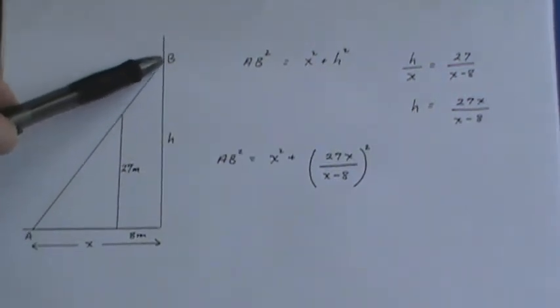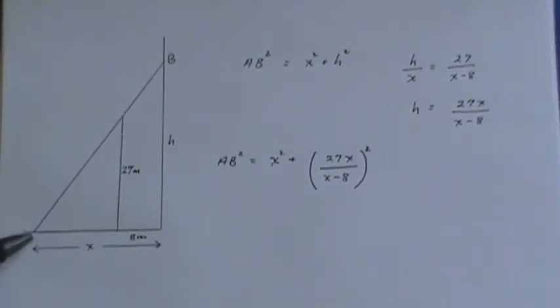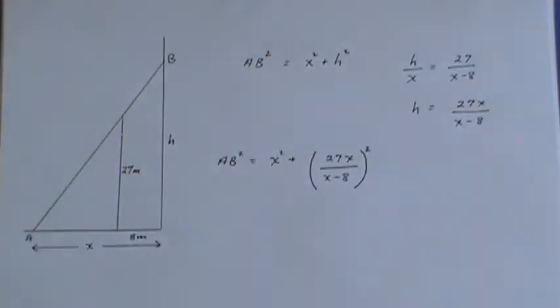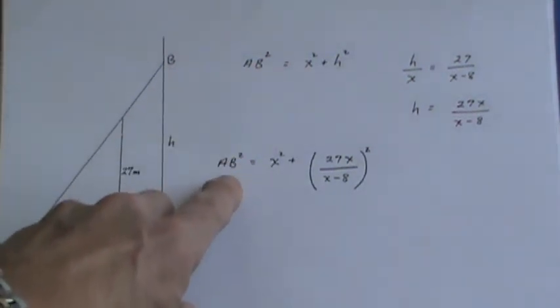So the ratio of h to x is equal to the ratio of 27 to x minus 8. And if I cross multiply here I get a replacement for h in this expression for ab squared.